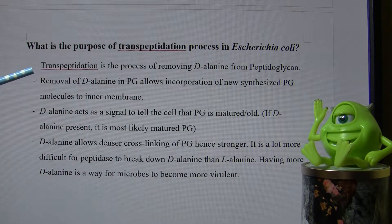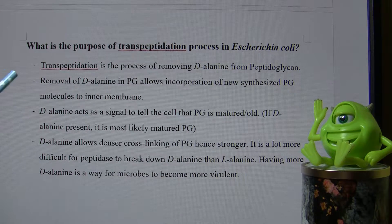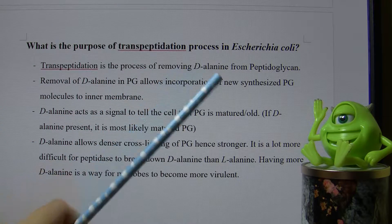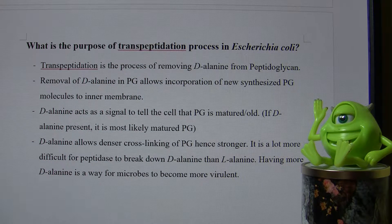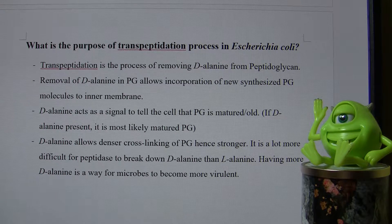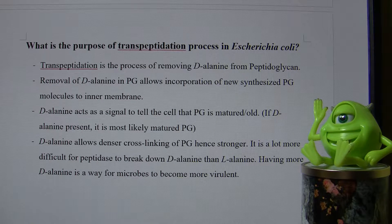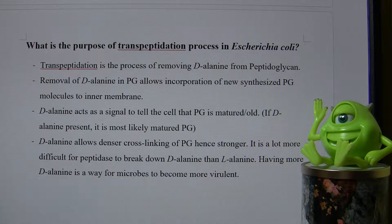For the transpeptidation process, this is really involved in peptidoglycan synthesis. Transpeptidation is the process of removing D-alanine from peptidoglycan. This removal of D-alanine allows newly synthesized peptidoglycan molecules to be incorporated into the inner membrane. Old peptidoglycan molecules may need to be repaired or destroyed.